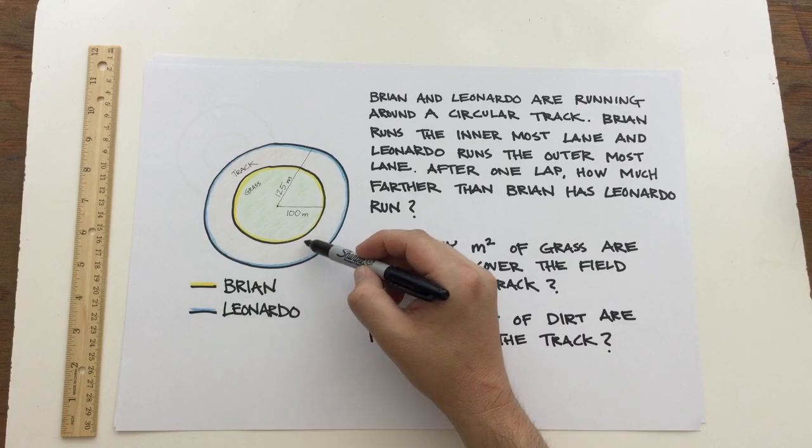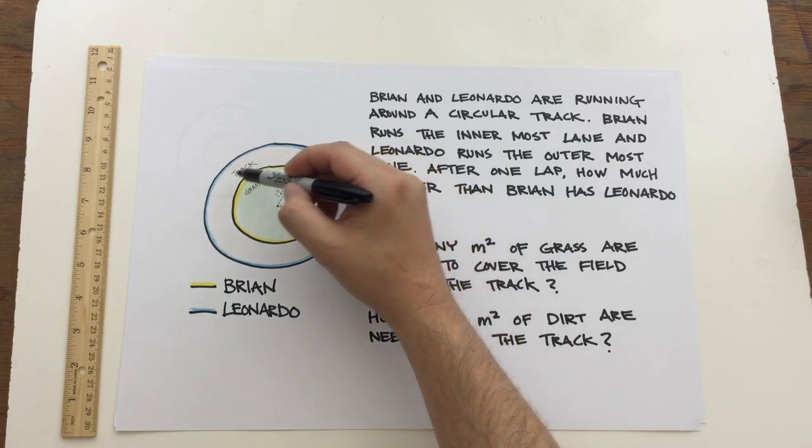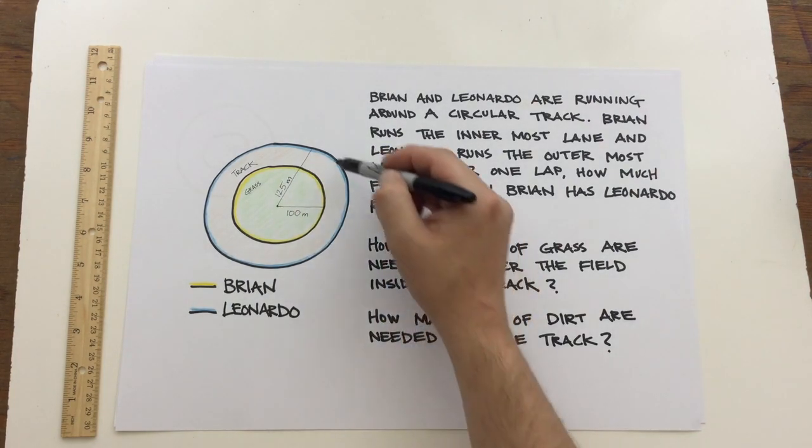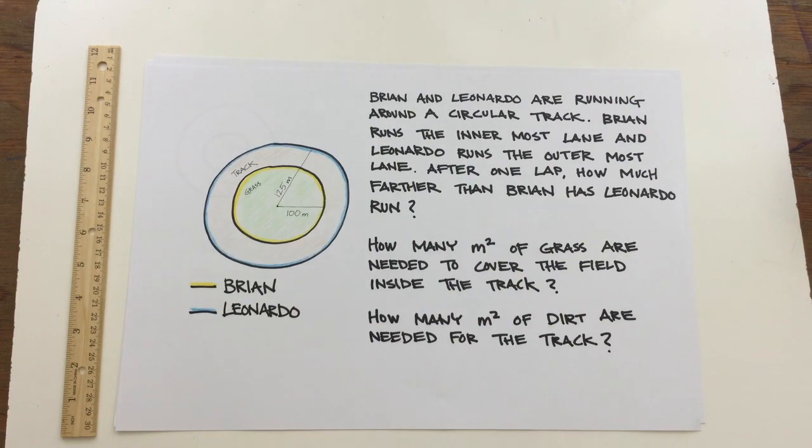The yellow represents the inside path that Brian takes on the track and the blue represents the outside path that Leonardo runs on the track.